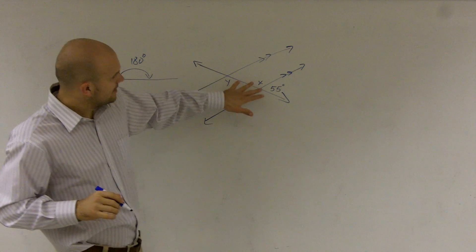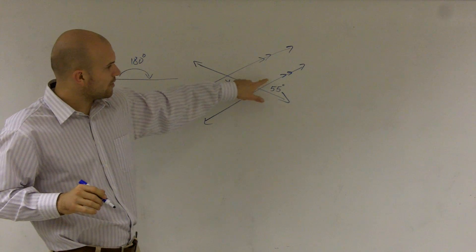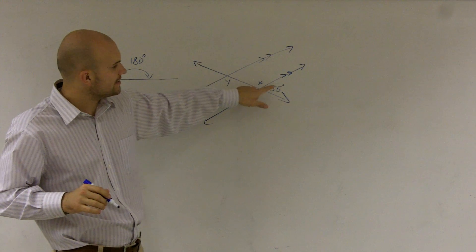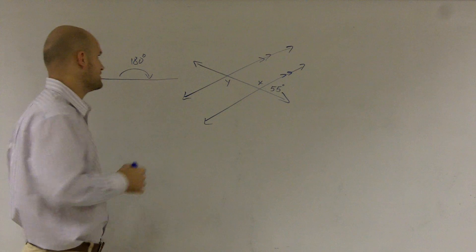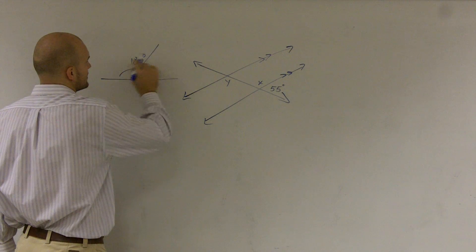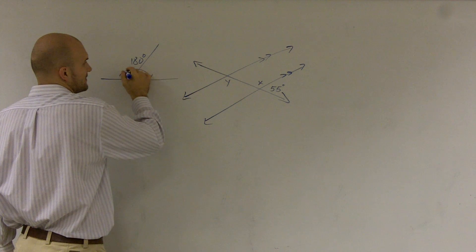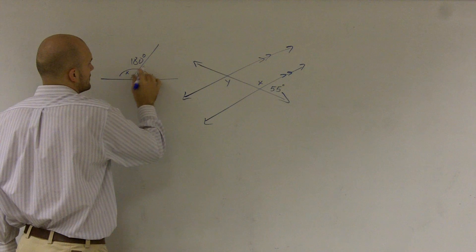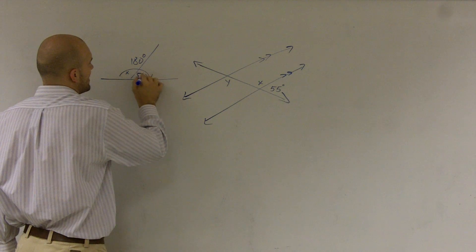So if you look right here, I have a straight line where I have one part of that line is x, is the angle x, and the other part is 55. So theoretically, what I can say is this whole thing equals 180, and this part is x, and this part is 55.